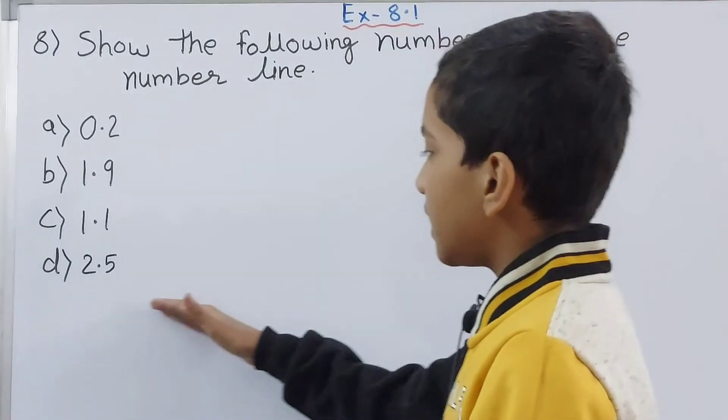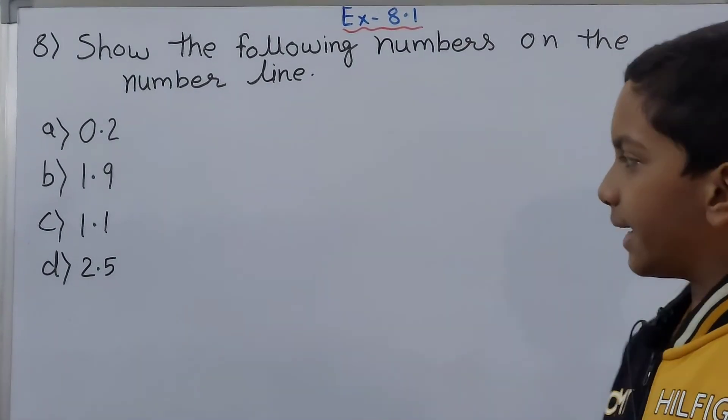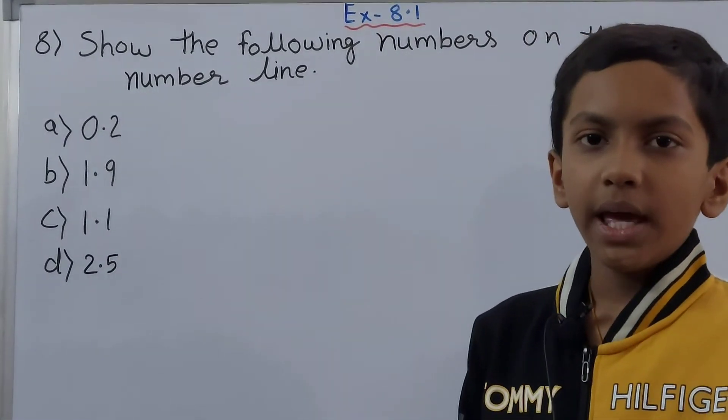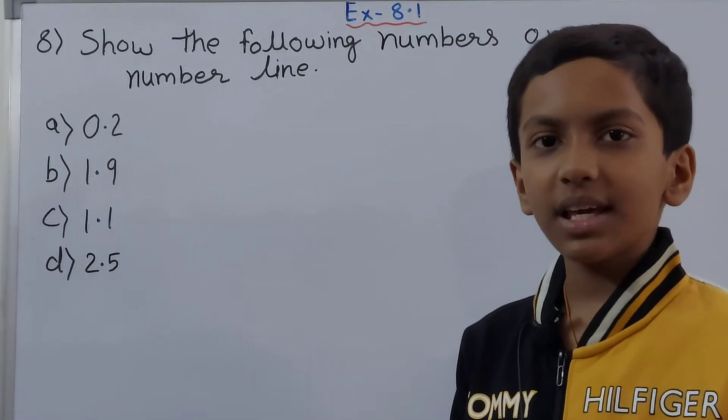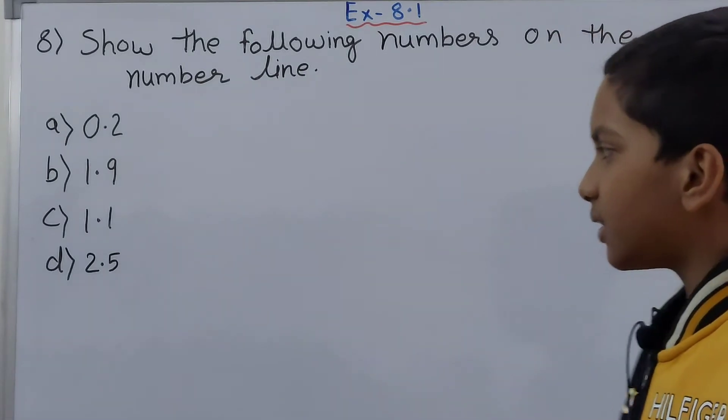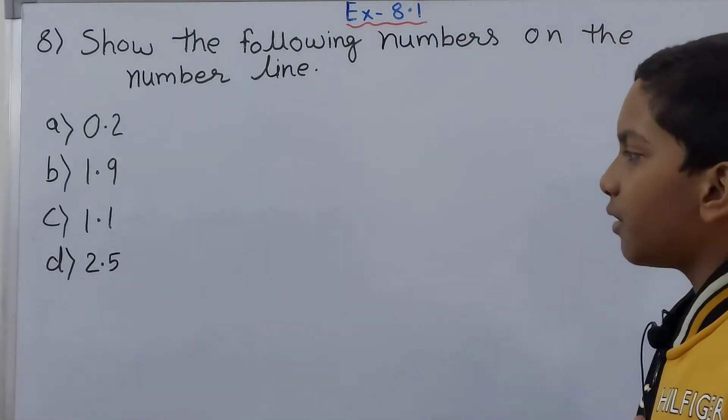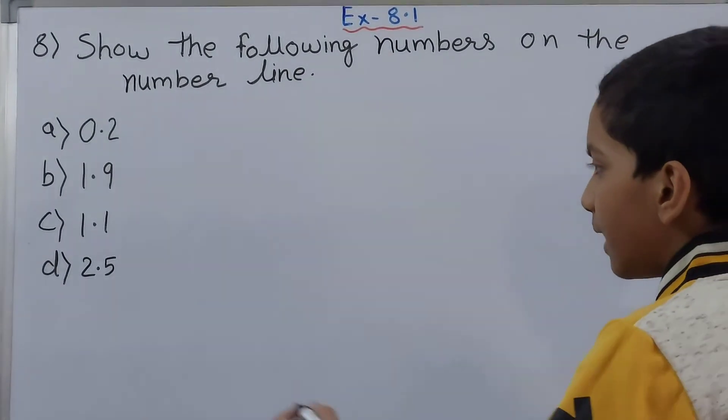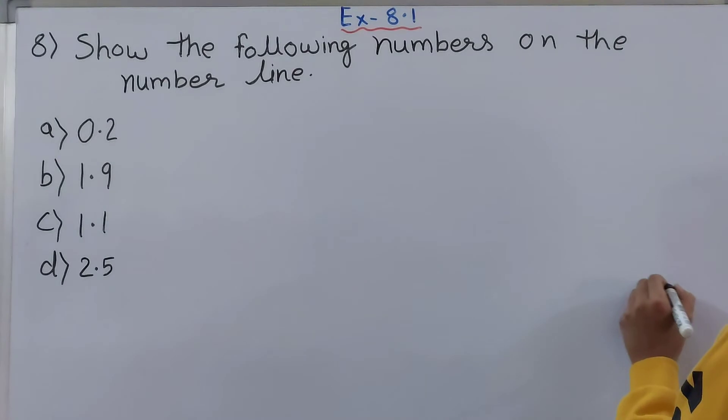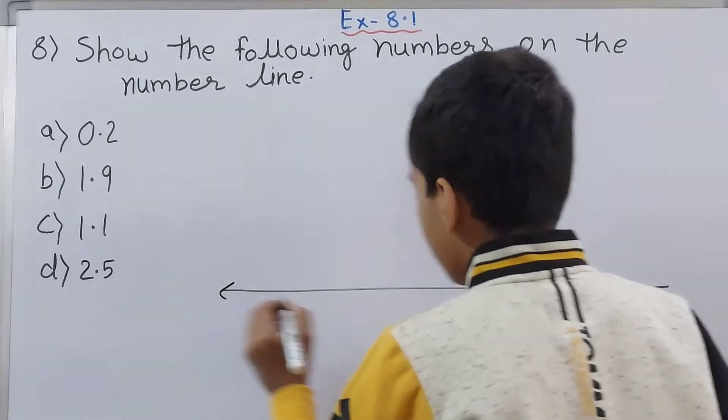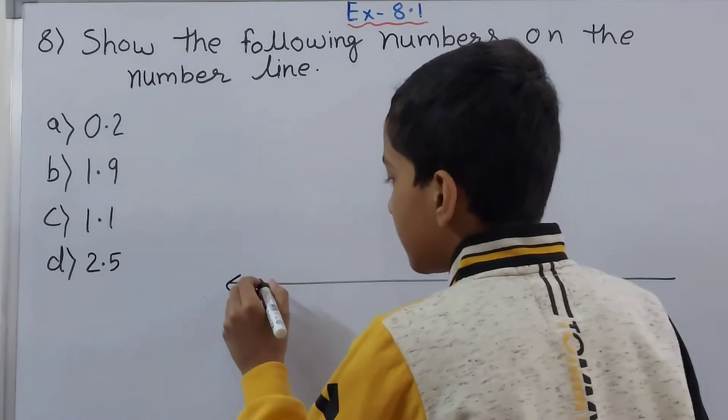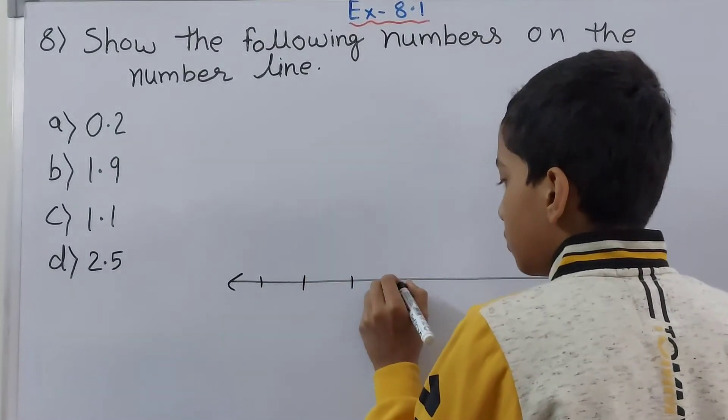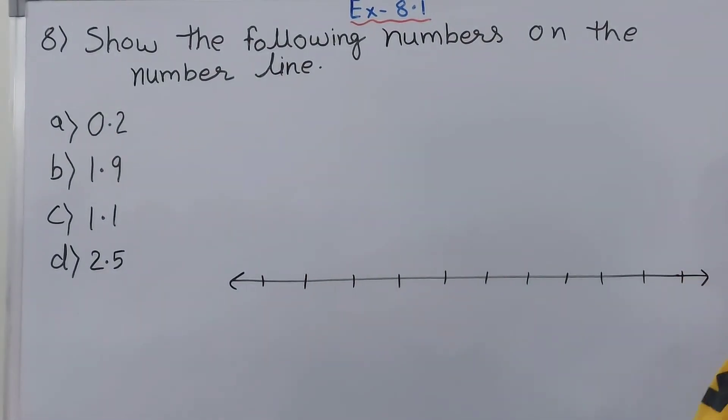The D part is 2.5. Again let's see the 2 whole numbers. First whole number will be 2 only. After 2, which whole number is there? Yes, it is 3. So that means the 2 whole numbers in which 2.5 lies are 2 and 3. Now let's draw a number line to see where we can represent them. Let's start dividing this into 10 equal parts. 2, and there goes the 10th part.